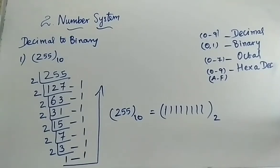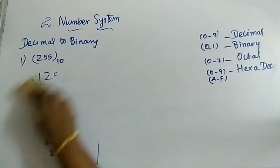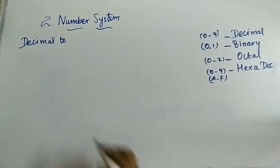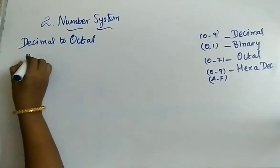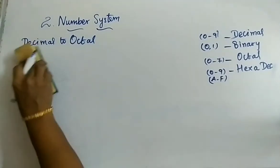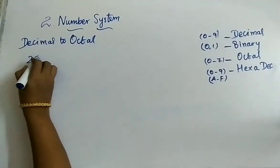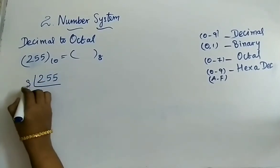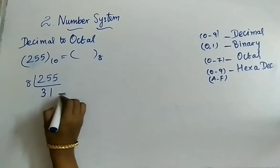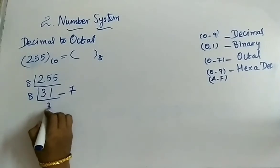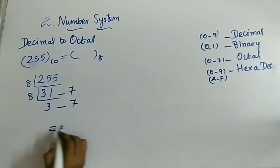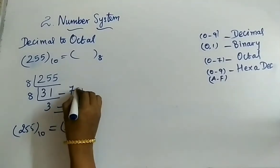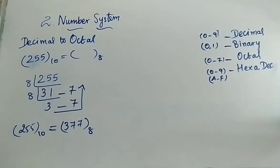Next we see the model decimal to octal. The same number, 255 to the base 10, is to be converted into base 8. You have to perform repeated division by 8. 255 divided by 8 gives 31 remainder 7; 31 divided by 8 gives 3 remainder 7. Writing from bottom to top, the answer is 377 to the base 8.